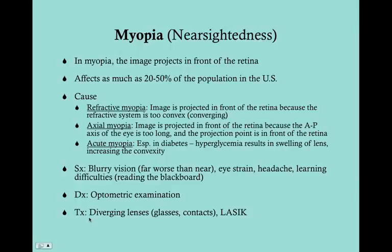The treatment for myopia is diverging lenses. If the refractive system is too convex, a diverging lens equalizes it so the image is projected onto the retina. With axial myopia, a diverging lens pushes back where the image is projected so it's correct for that longer eye. These lenses can be either glasses or contacts depending on patient preference - usually glasses when children are very young, and contacts may be preferred as they get older.